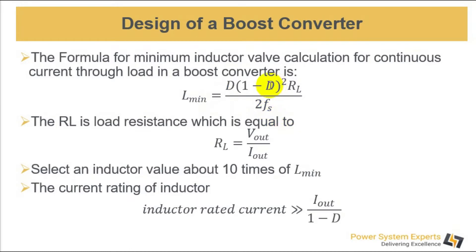The RL is the output load resistance. It comes from Ohm's law according to this formula. The current rating of the inductor is very important. It must be very much greater than I out divided by 1 minus D. You can select 4 times maybe of this value.